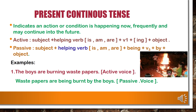Present continuous tense indicates an action or condition happening now, frequently, and may continue into the future. In active voice: subject plus helping verb (is/am/are) plus V1+ing plus object. In passive voice: subject plus helping verb (is/am/are) plus 'being' plus V3 plus 'by' plus object. Example: 'The boys are burning waste papers' becomes 'Waste papers are being burned by the boys.' 'Being' plays a very important role in passive voice.